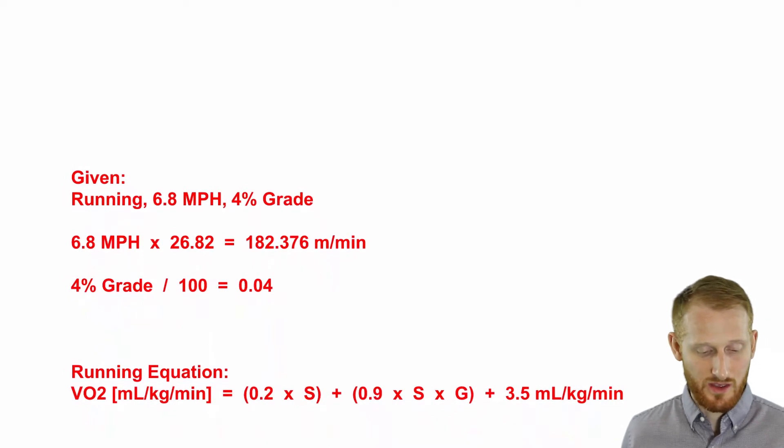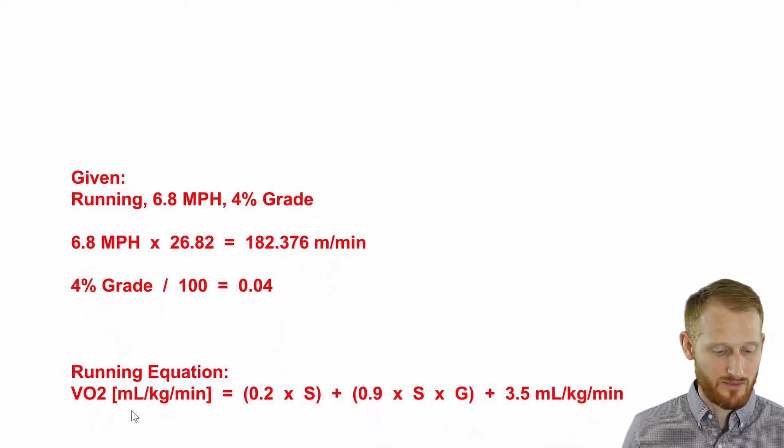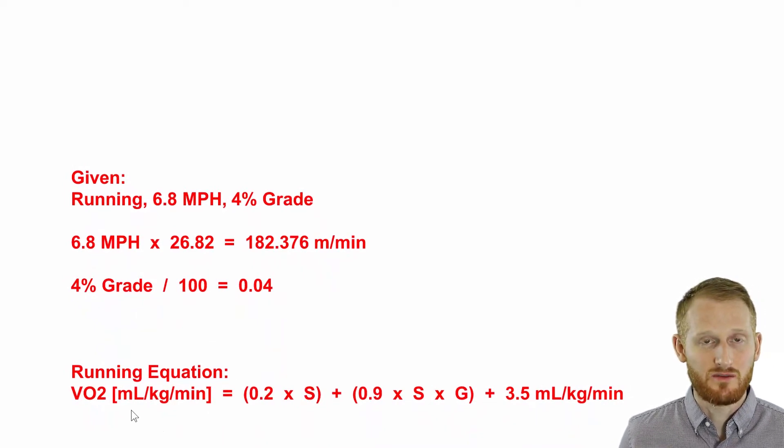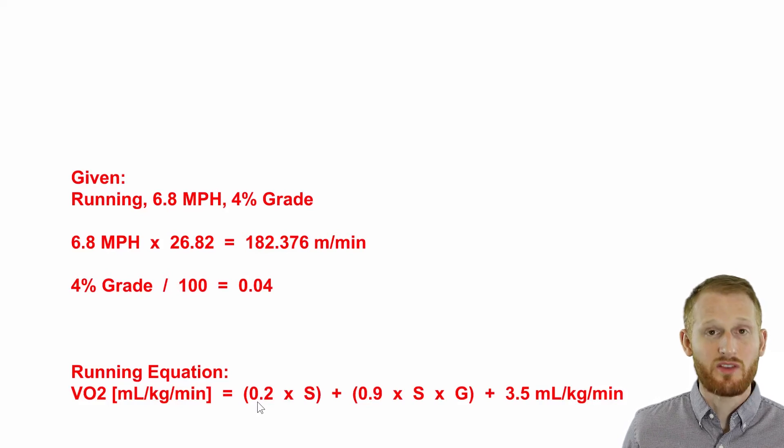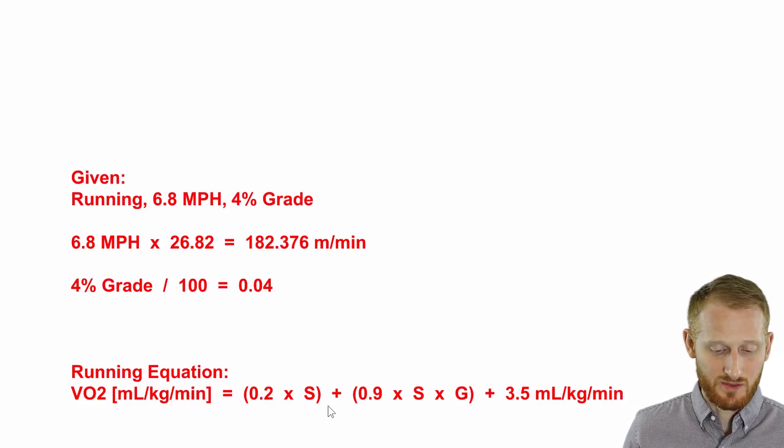We're using the running equation, which is oxygen consumption in relative terms. So milliliters of oxygen per kilogram of body mass per minute is equal to, in parentheses, 0.2 times the speed, out of parentheses now,